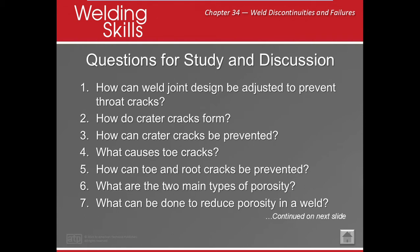What can be done to reduce porosity? Porosity is prevented by improving welding housekeeping conditions: clean materials, clean equipment, proper alignment away from fans and drafts, and avoid using excessive current and arc length.